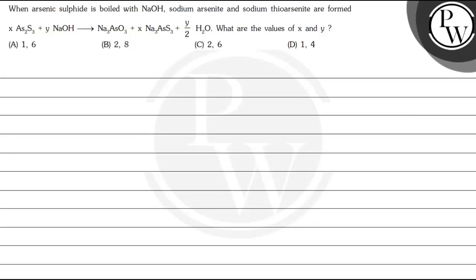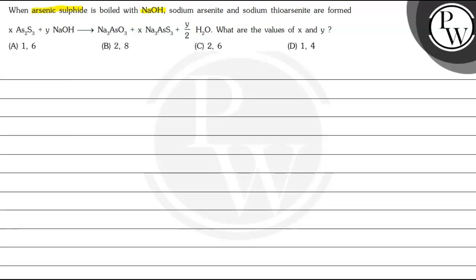Hello students, let's see this question. The question is when arsenic sulfide is boiled with NaOH, sodium arsenide and sodium thioarsenide are formed.